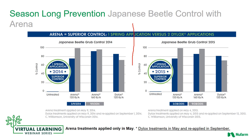This chart shows the results of a study conducted in two different years, 2014 and 2015. The bar graphs depict the percent control of Japanese beetle grubs with applications of Arena and Dialogs. In 2014, the Arena treatment was applied May 9th only, while the Dialogs treatment was applied May 9th and reapplied in September.